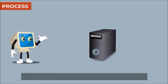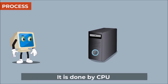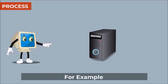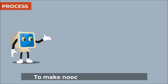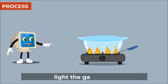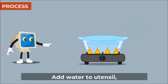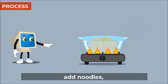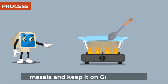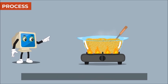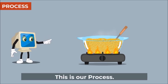Process: Work done on data is called process. It is done by CPU, the central processing unit. For example, to make noodles, take a utensil, light the gas stove, add water to utensil, add noodles, masala and keep it on gas stove to boil for five minutes. This is our process.